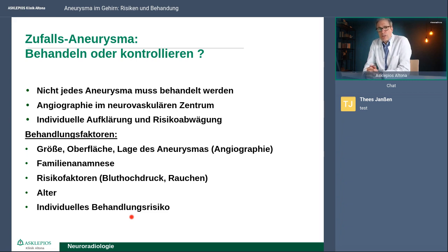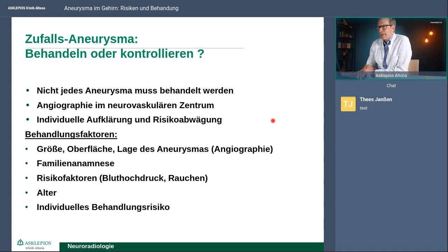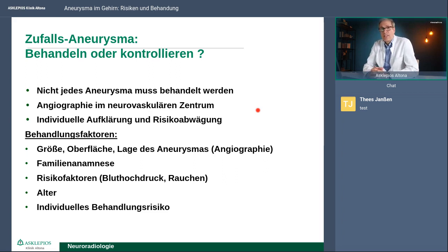Wie findet man die? Sehr viele Patienten werden heutzutage aus den unterschiedlichsten Gründen im Kernspinn untersucht – meistens Ausschlussuntersuchungen, um sicherzugehen, dass nichts Schlimmes vorliegt – und dann entdeckt man zufällig ein Aneurysma. Was macht man jetzt, wenn man dieses Aneurysma entdeckt hat? Nicht jedes Aneurysma muss behandelt werden. Man muss sich das in Ruhe angucken und zu den Experten gehen – in eine Klinik, die sowohl Neurologie als auch Neurochirurgie als auch Neuroradiologie hat. Dann muss man im Einzelfall die Patienten angiografieren und sich alle Fakten angucken, um zu überlegen, ob man das Aneurysma behandelt oder nicht. Ganz wesentlich ist, wie das Aneurysma aussieht, und das sehen wir in der Angiografie.